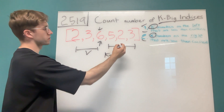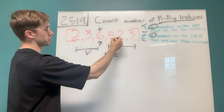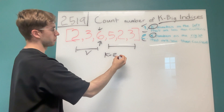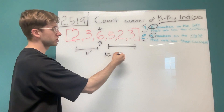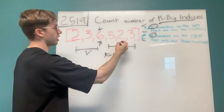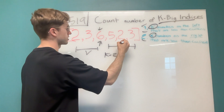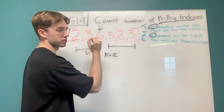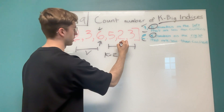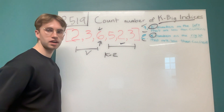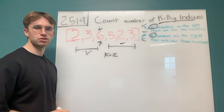And then on the right-hand side, there are three numbers, so there's at least k numbers on the right-hand side that are less than six. That validates that side as well.